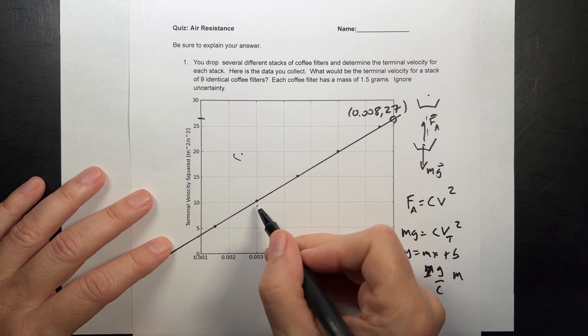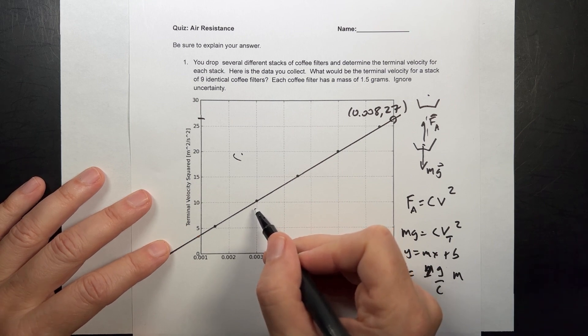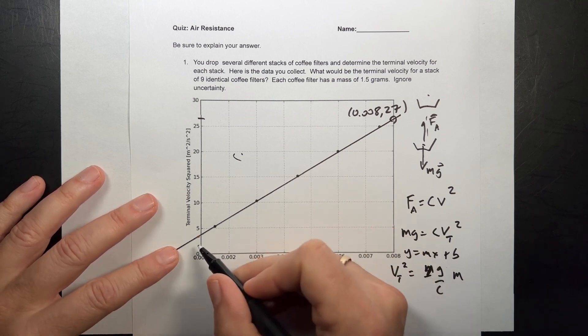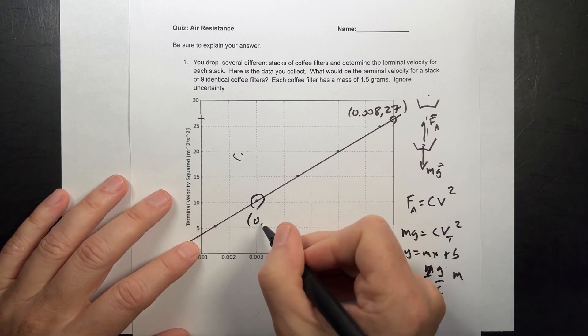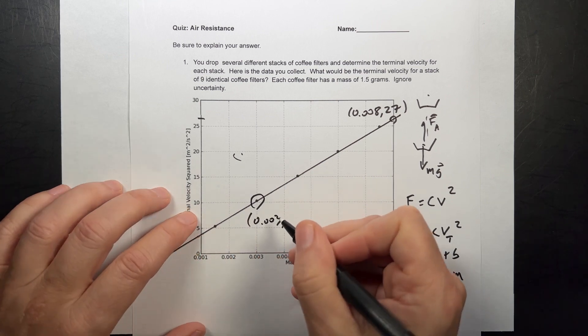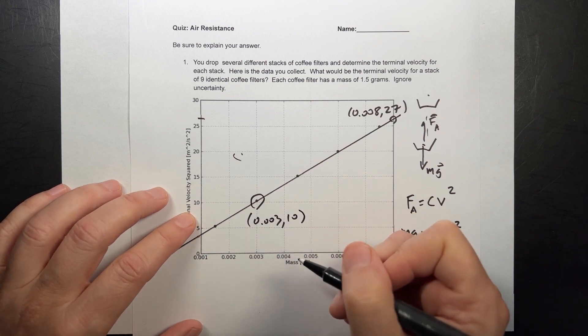And let's pick, I know that point's right on, I shouldn't pick that point, but it's so tempting to not pick that point. You can pick any of these points, but that one right there, I know the x value is 0.003, and the y value is 10. So that's good.